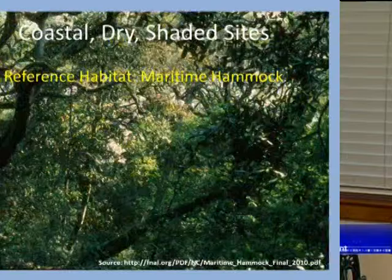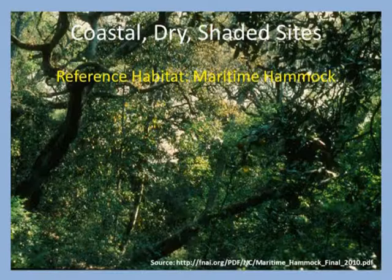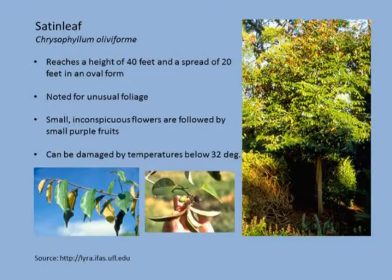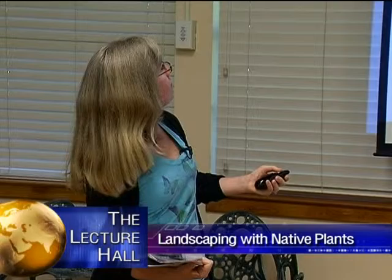Moving on from coastal full sun sites to coastal dry, shady sites — like a maritime hammock. Starting with satin leaf: this is a tree with unique leaves. The top of the leaves is a glossy green, and the underside is a rusty, coppery color. When the wind blows and the leaves flutter, you get a nice effect. You can imagine it being used as an accent in a naturalized border. It is sensitive to frost, but it is native to this part of Florida, all the way north to Brevard, mostly in coastal situations where it has a moderating influence from the ocean.